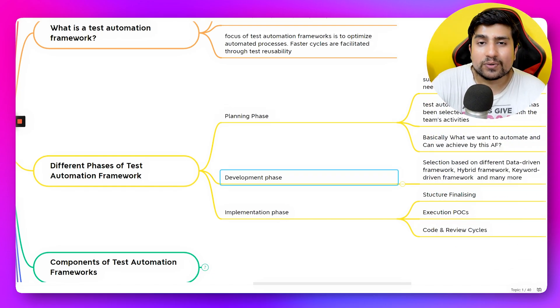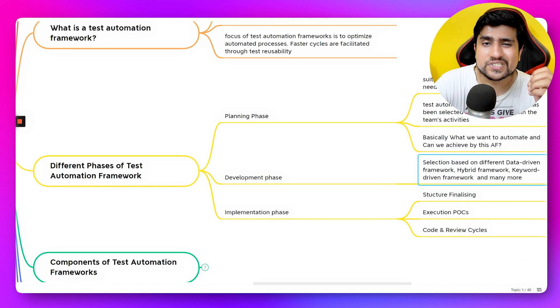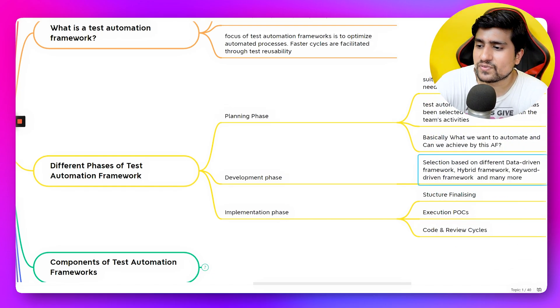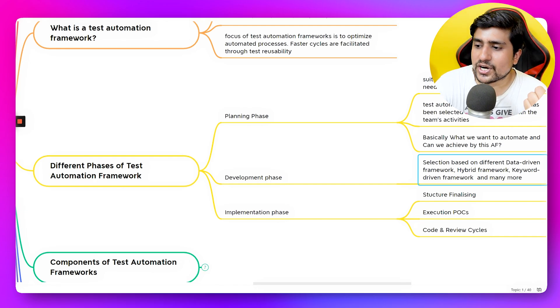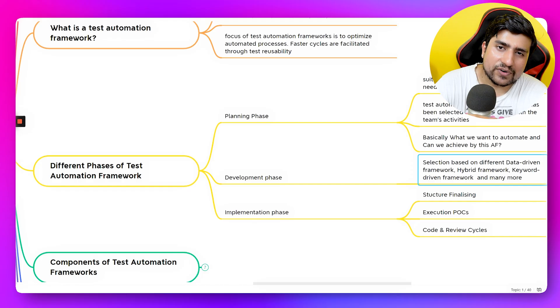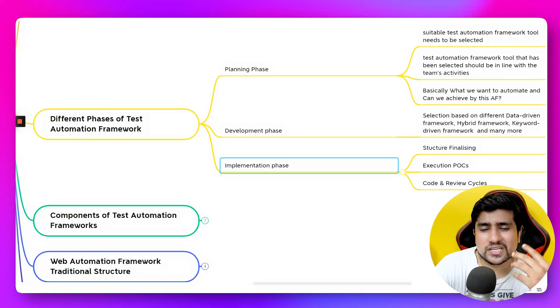In the development phase, you create your test cases and select the type of automation framework — for example, data-driven, hybrid, or linear-based. These different framework types are explained in a separate video, and a link will be provided where you can learn about the different frameworks available for web automation.